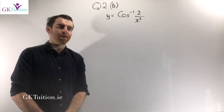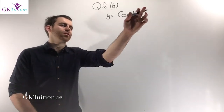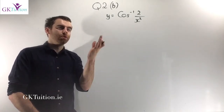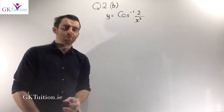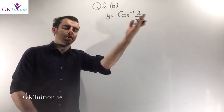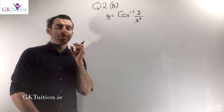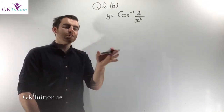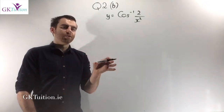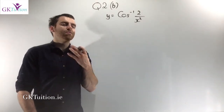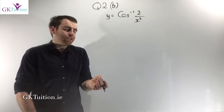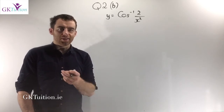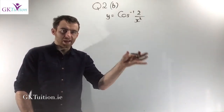The second part of question 2, worth 10 marks, asks you to differentiate y equals cos inverse of 2 over x squared. It helps to write it as y equals, the way we always differentiate things. There are two ways to do this question — there's a formula in the maths tables, and the method we taught in the intensive. I'll show both, but the first method is more reliable and I'd advise you to use it.